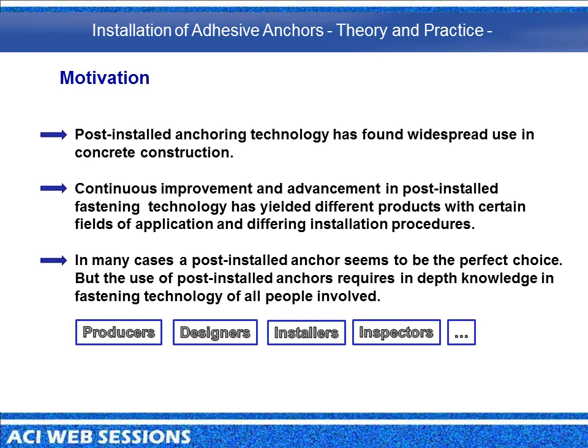Post-installed anchoring technology with mechanical anchor and adhesive anchor systems has found widespread use in concrete construction due to their numerous fields of application and flexibility in fastening solutions. This has yielded different products on the market with different installation procedures. For many applications, a post-installed anchor seems to be the perfect choice. However, as with cast-in anchors, the use of a post-installed anchor requires in-depth knowledge of all people involved — producers, engineers, installers, and inspectors who ensure installation is done in accordance with installation instructions and evaluation reports.